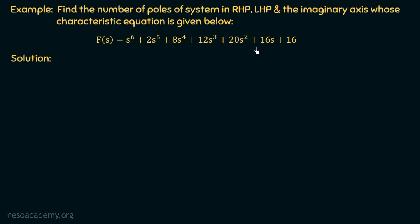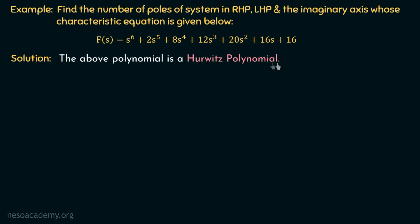Moving on to the solution, we first check the necessary conditions of stability. All coefficients of the characteristic equation must have the same sign. We can see all coefficients are positive and none vanishes. This is a 6th order characteristic equation and all powers from s^6 to s^0 are present. So both necessary conditions of stability are satisfied, and this is a Hurwitz polynomial. To determine stability, we apply the Routh test and start forming the Routh array.